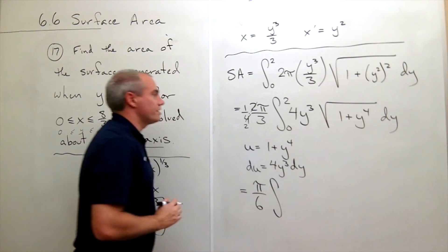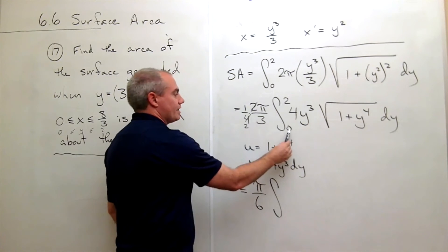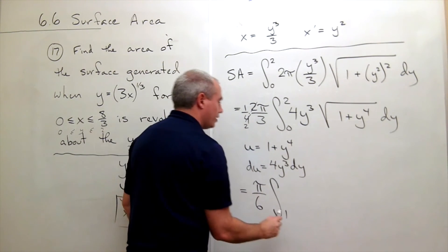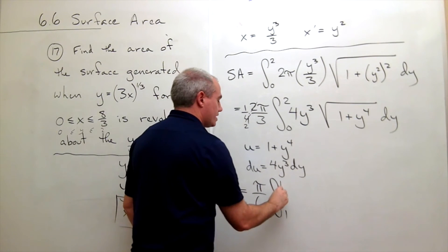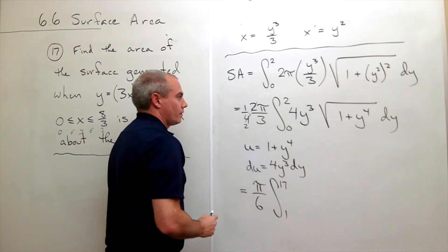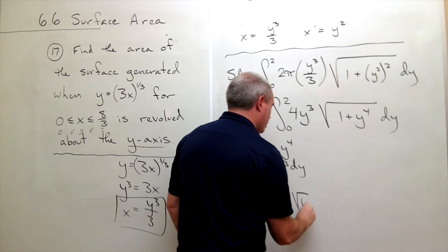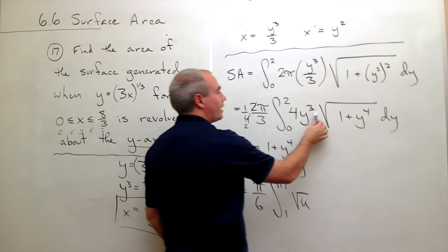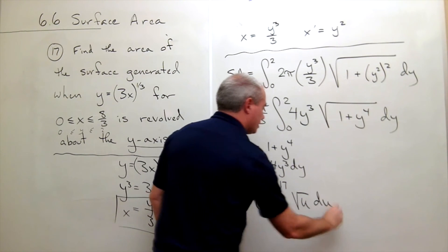Now I can change my limits of integration. If y is 0, u is 1. And if y is 2, u is 17. On the inside I have the square root of u, and then 4y cubed dy is my du.